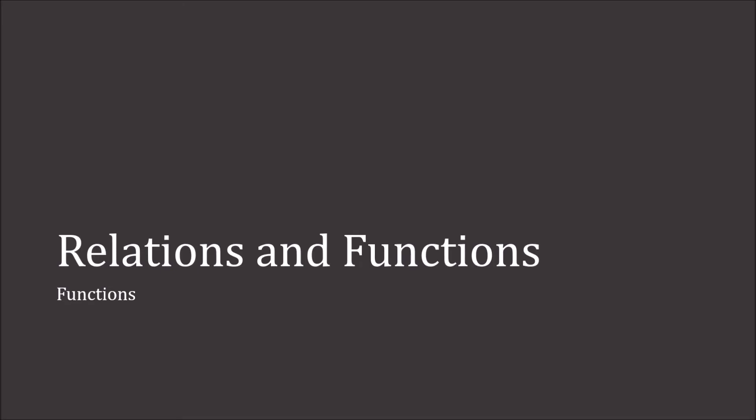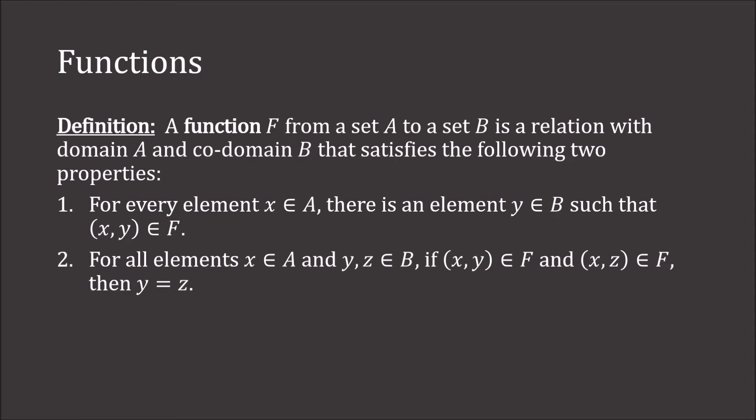We now begin our study of functions. A function f from a set A to a set B is a relation with domain A and codomain B that satisfies two properties. First, for every element x in A, there is an element y in B such that (x, y) is in F — that is, every element in the domain gets mapped to something in the codomain.